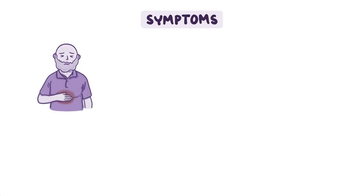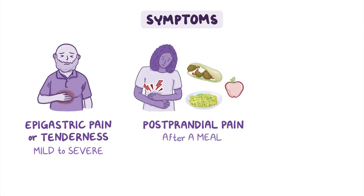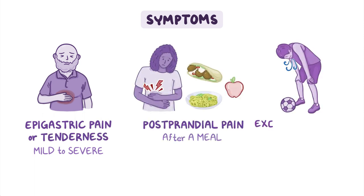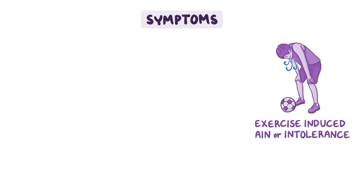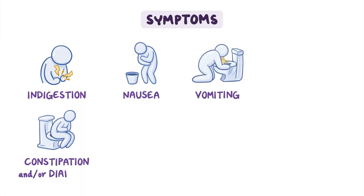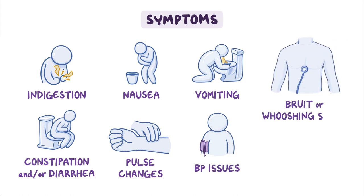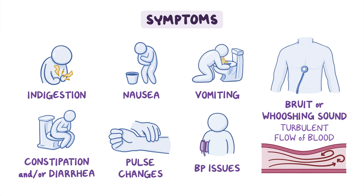Those diagnosed with MALS who develop symptoms complain of mild to severe epigastric pain or tenderness, post-prandial pain after a meal, and/or exercise-induced pain or exercise intolerance. Symptoms may include indigestion, nausea, vomiting, constipation, and/or diarrhea, pulse changes, and blood pressure issues. Additionally, a bruit or whooshing sound may be heard with a stethoscope over the epigastric area, caused by the turbulent flow of blood through a narrowed blood vessel.